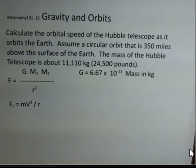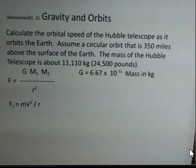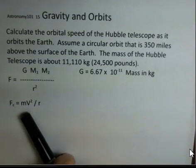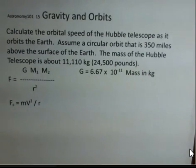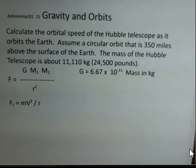Then the centripetal force formula. The centripetal force is equal to the mass of the orbiting object times the speed squared divided by the radius. Again, the center to center distance for objects.